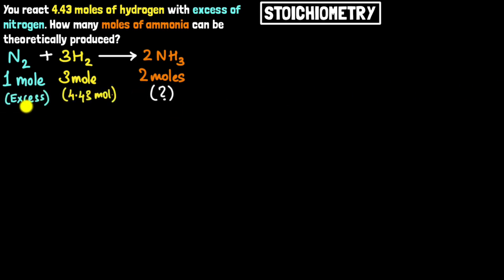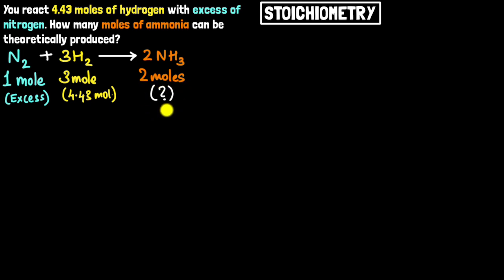We have excess nitrogen, so we don't have to worry about it. But we have hydrogen in limited quantity — only 4.43 moles of hydrogen — and from that we need to figure out how many moles of ammonia we would get. In some sense, I need to convert from the amount of hydrogen to the amount of ammonia, so I need to build a conversion factor using the ratios from the balanced equation. I know that for this reaction, I need 3 moles of hydrogen for 2 moles of ammonia.